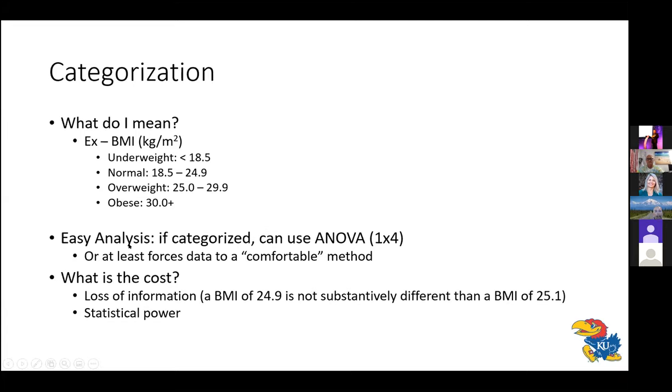So why do we categorize BMI when we could treat it as a continuous variable? Well, I think one of the reasons is that it allows us to analyze data in a way that we're comfortable with. So if you have a fair amount of experience with analysis of variance and you're comfortable analyzing data that way, treating BMI as continuous variable and using regression models is maybe not as comfortable for you. But it's not an ideal situation if the only tool you have is a hammer, then everything starts looking like a nail. What are the implications of categorizing continuous variables? One is the loss of information that I mentioned. But I think more importantly is the loss of statistical power.